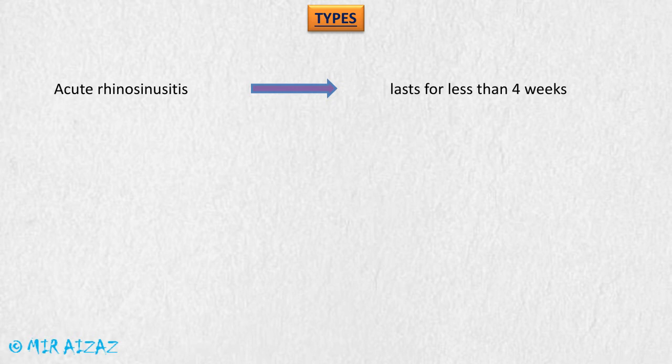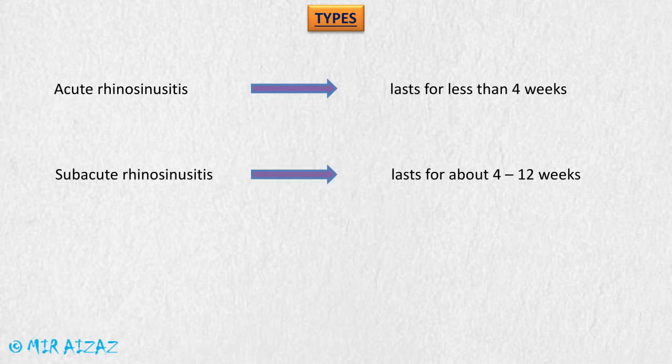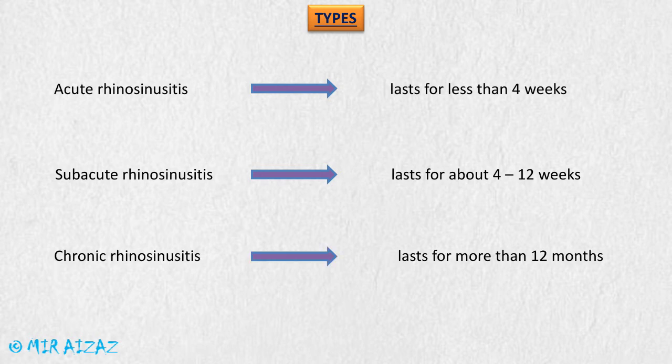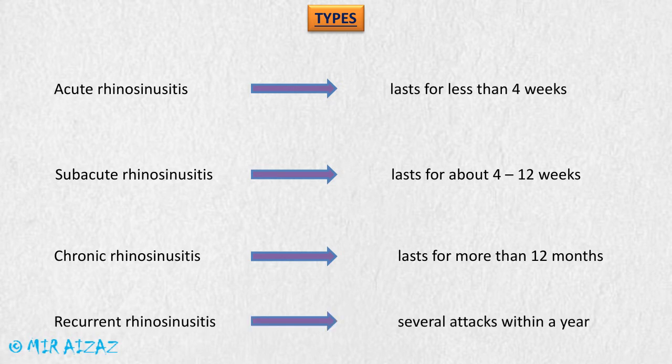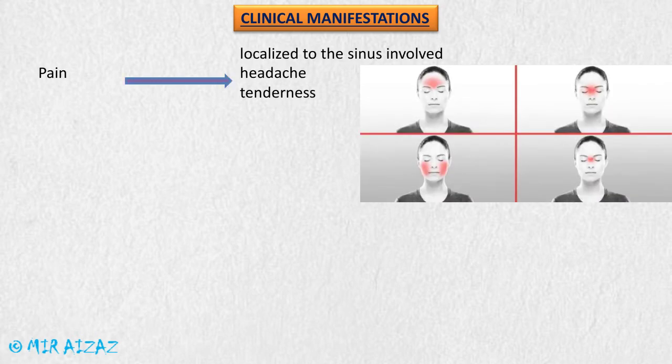The types of rhinosinusitis include: acute rhinosinusitis, which lasts less than four weeks; sub-acute rhinosinusitis, lasting 4 to 12 weeks; chronic rhinosinusitis, lasting more than 12 months and possibly continuing for several years; and recurrent sinusitis, which involves several attacks within a year.